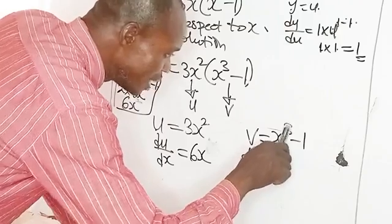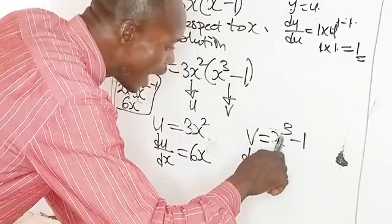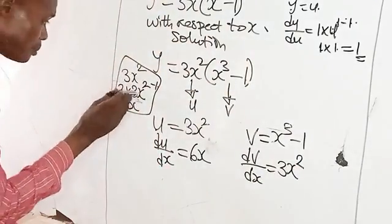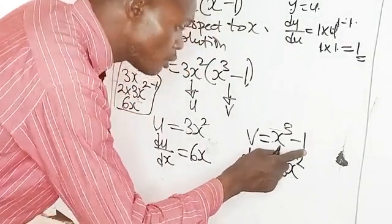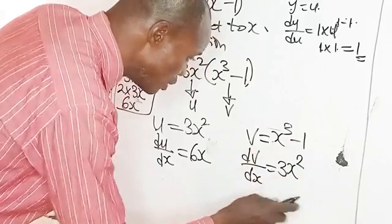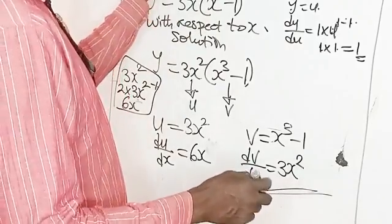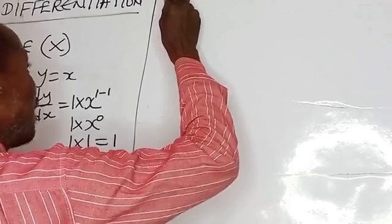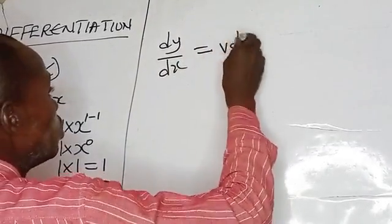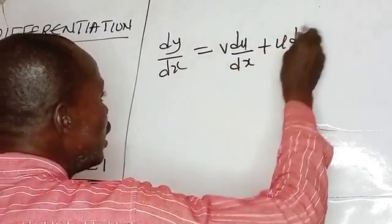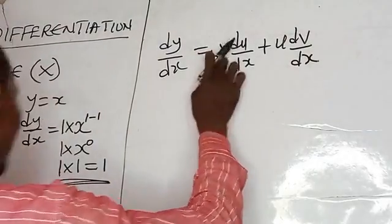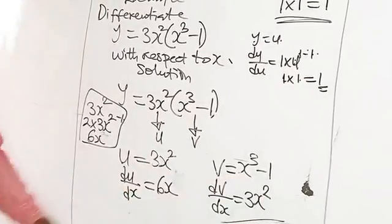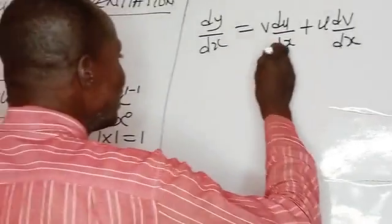For dv/dx, we differentiate x to the power 3 minus 1. The power 3 multiplies the coefficient: 3 times x gives 3x raised to power 3 minus 1, which is 3x squared. The constant term minus 1 differentiates to 0, so dv/dx equals 3x squared. Recalling the product rule formula: dy/dx equals v(du/dx) plus u(dv/dx). Here v equals x cubed minus 1.